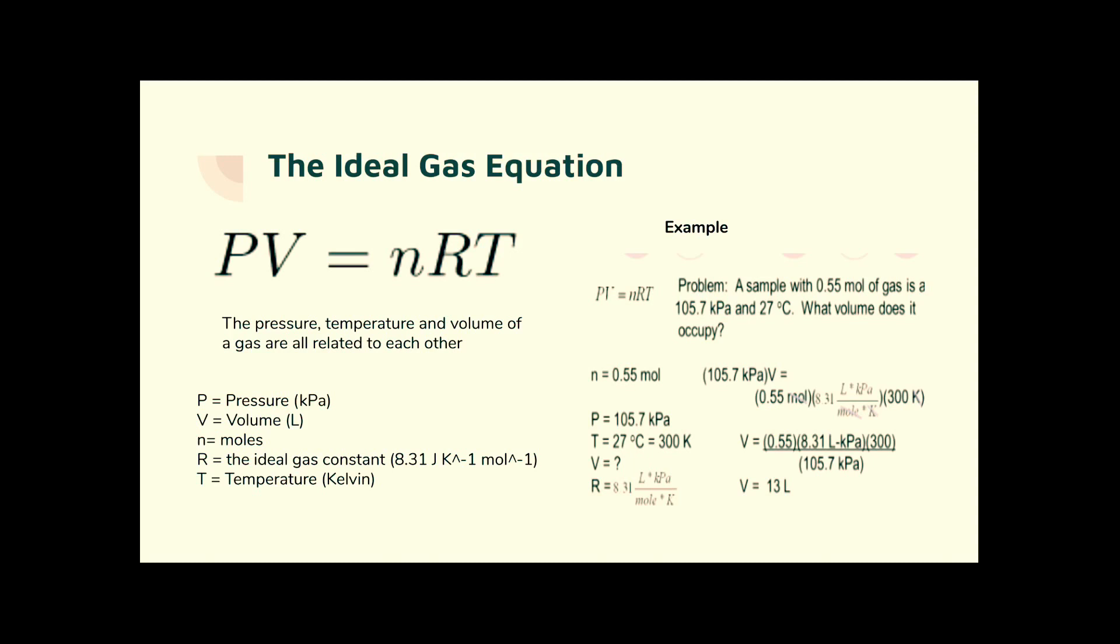N, 0.55 given in the question. 8.3 liters per kilopascals. That's in your data booklet. And 300 is 27 degrees C plus 273. Divided by the pressure, which is already in kilopascals, 105.7. Plug that into your calculator. 13 liters is the new volume.